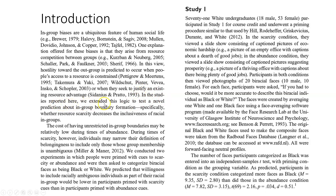'In the studies reported here, we extended this logic to test a novel prediction about in-group boundary formation — specifically, whether resource scarcity decreases the inclusiveness of racial in-groups.' What they're talking about is whether a biracial person is more likely to be included in the respondent's racial in-group, or rejected into the other group, depending on whether there is resource scarcity or an imbalance in resources being justified.